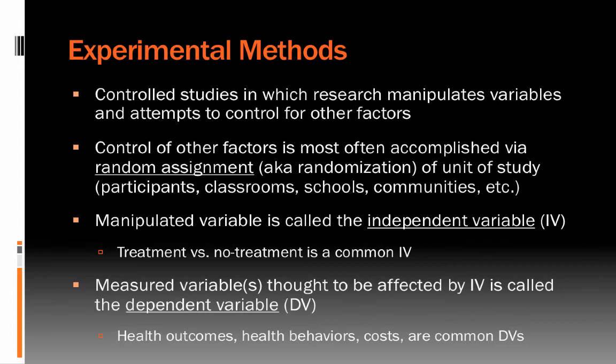Sometimes in health psychology the unit of study is not individual participants but might be classrooms, schools, or communities. In some studies, researchers identify communities similar in size, demographic makeup, or other variables, and randomize at the community level. For example, if examining the effect of a new health promotion program, they may randomly select which community gets the intervention versus not, helping us understand the impact of that intervention on the community as a whole.